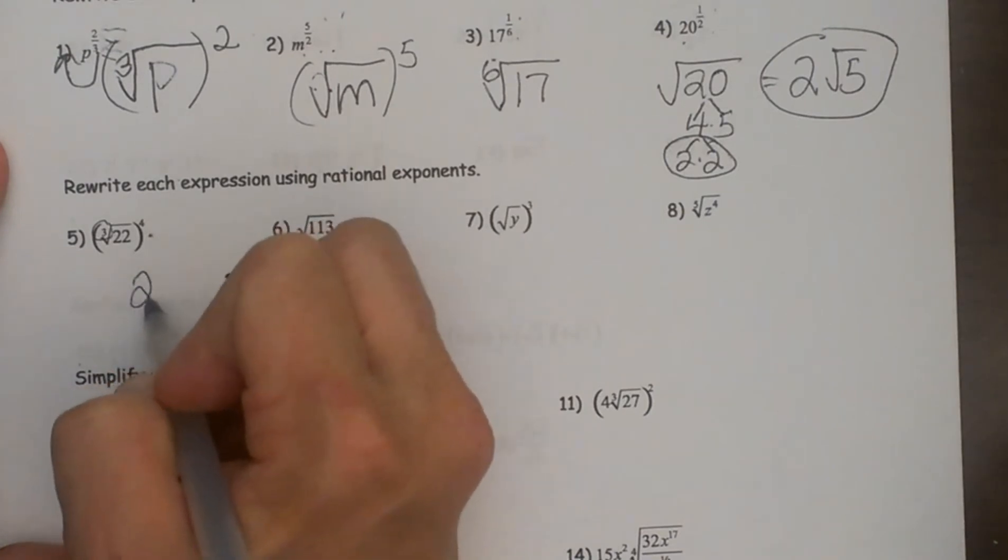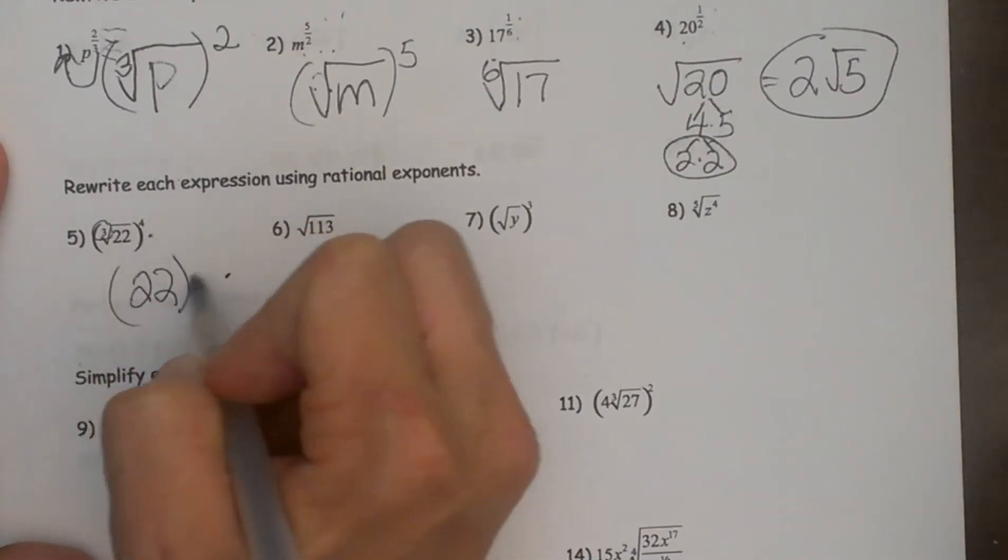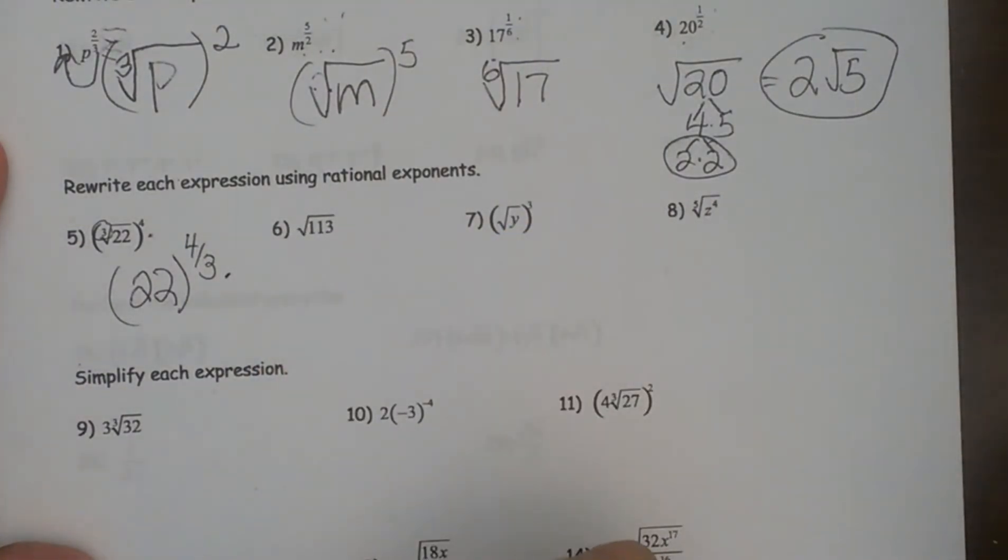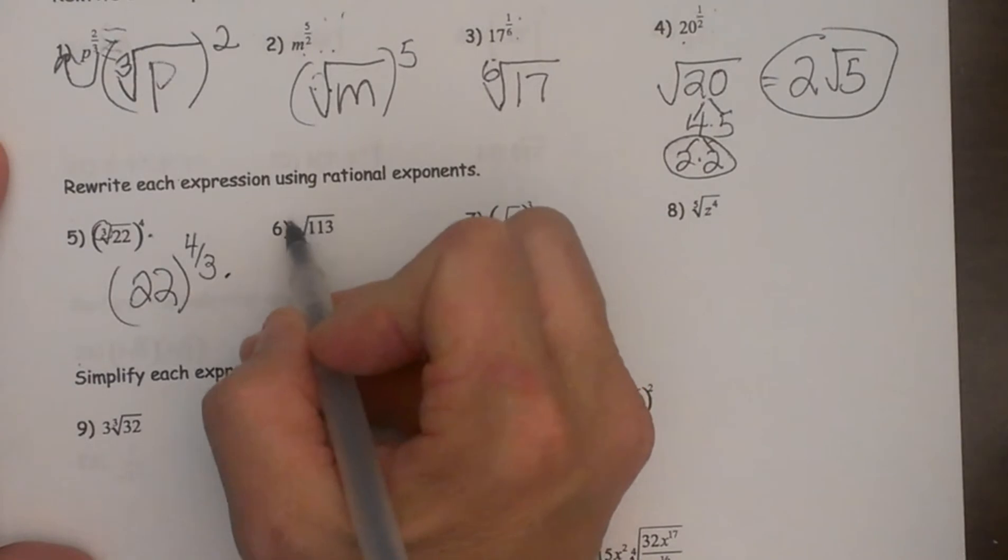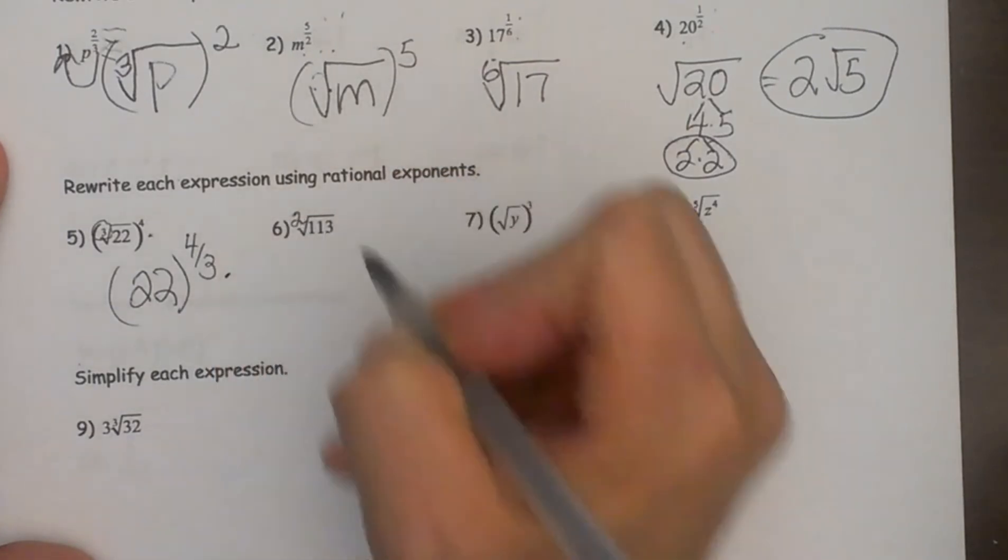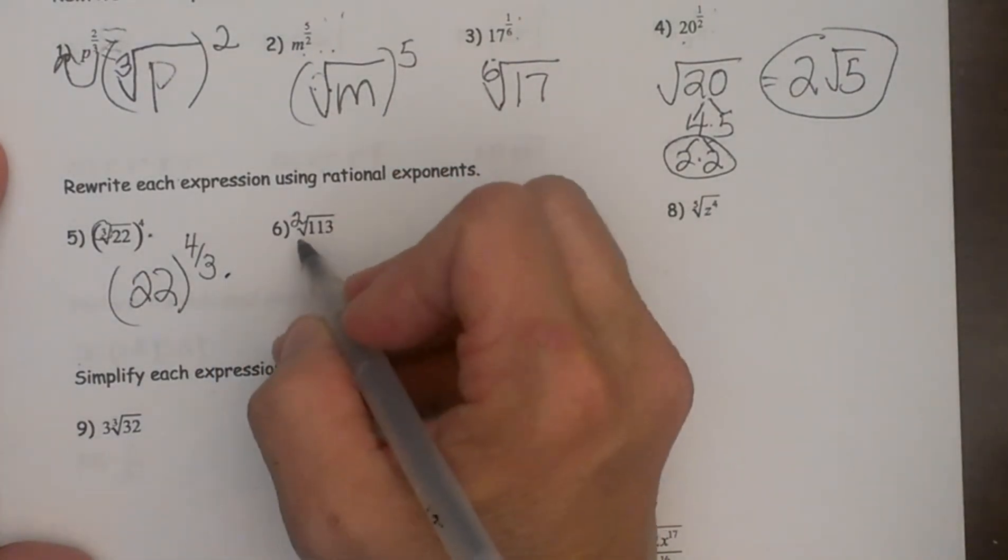So this is going to be twenty-two to the four thirds power. The next one is one hundred and thirteen. Now we don't have a number here but what root is this? This is the square root. So I am just going to write in a two here because we know that a square root means you have two terms that multiply together to get the number.